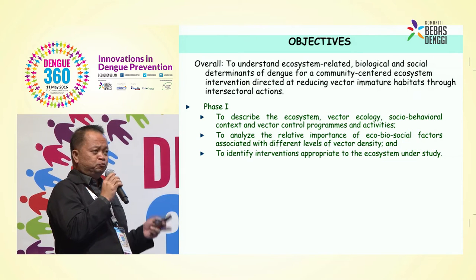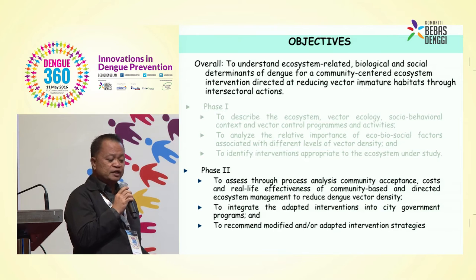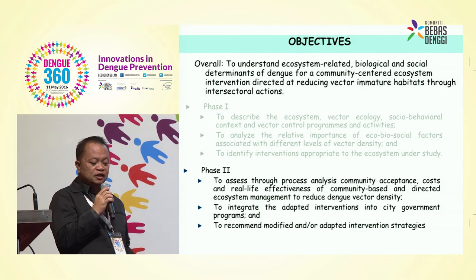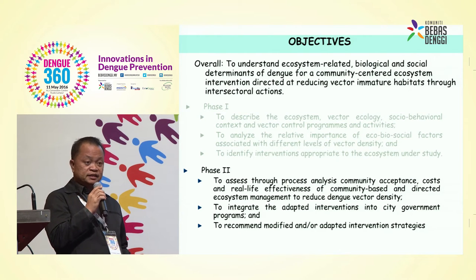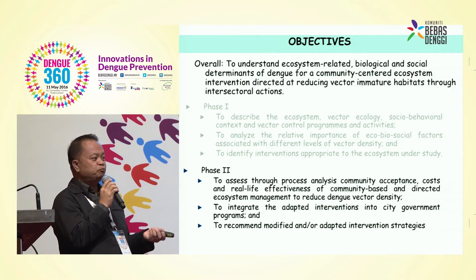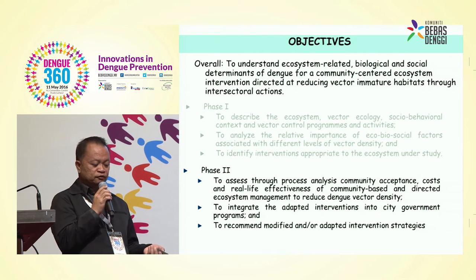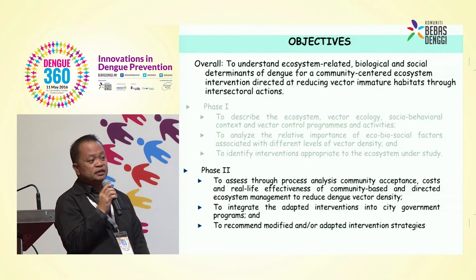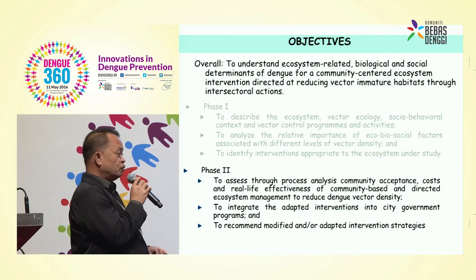Muntinlupa City is the place where our research institute is actually located. There's another phase two, which is after finding specific interventions, we want to assess them through process analysis, community acceptance, cost, and real-life effectiveness of community-based and directed ecosystem approaches to reduce vector density, and to integrate the adapted intervention into city programs. If we found a number of interventions, we want them to be accepted and be part of the City of Muntinlupa control program, and to recommend and modify the adapted intervention strategies if it has impact on the national dengue control programs and national policy for further control of dengue in the Philippines.